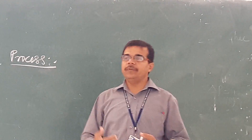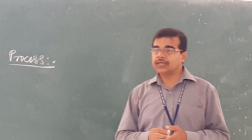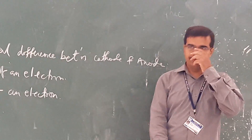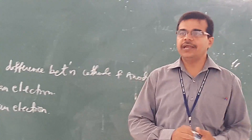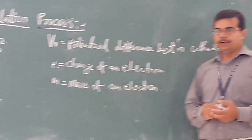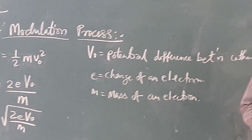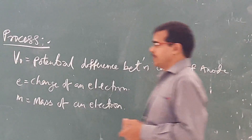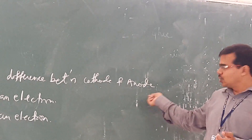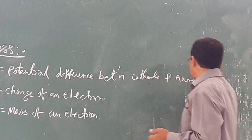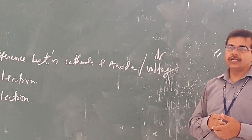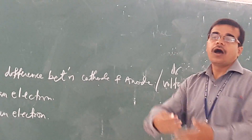Between the buncher and catcher cavity, what will be the velocity, or what are the different parameters on which the velocity of the electron depends? Here we are considering the potential energy of the electron. This capital V₀ is the potential difference between your cathode and the load — it is the DC voltage we are applying.